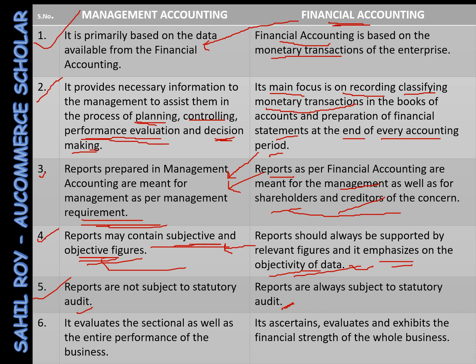The last point: management accounting evaluates the sectional as well as the entire performance of the business — it evaluates performance both section-wise and as a whole. In financial accounting, it assesses, evaluates, and exhibits the financial strength of the whole business.